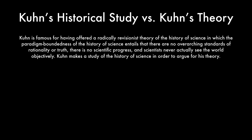Kuhn is famous for having offered a radically revisionist theory of the history of science, in which the paradigm-boundedness of the history of science entails that there are no overarching standards of rationality or truth, there is no scientific progress, and scientists never actually see the world objectively. Kuhn makes a study of the history of science in order to argue for that theory.